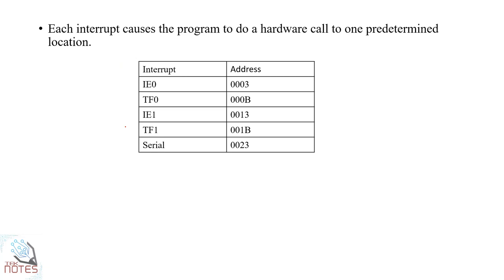You can use this particular order for vector addresses. The location of each interrupt is a specific address. The addresses are: INT0 — 0003, TF0 — 000B, INT1 — 0013, TF1 — 001B, serial port — 0023. So the addresses are 0003, 000B, 0013, 001B, and 0023. In each particular location, you can save that type of interrupt service subroutine.